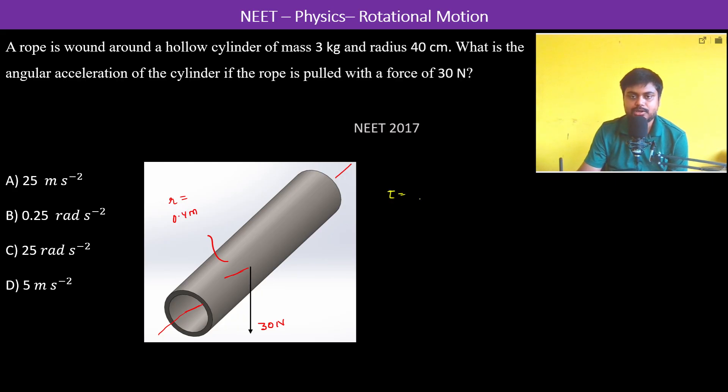Both are at 90 degrees, so therefore R into F. This is equal to I alpha. So therefore we have F into R is equal to I. It's a hollow cylinder, so therefore M R squared into alpha. R and R is gone, so therefore alpha is equal to F by M R.